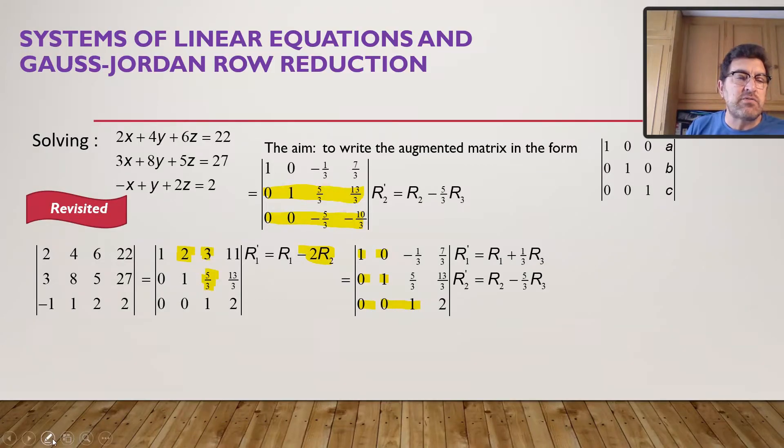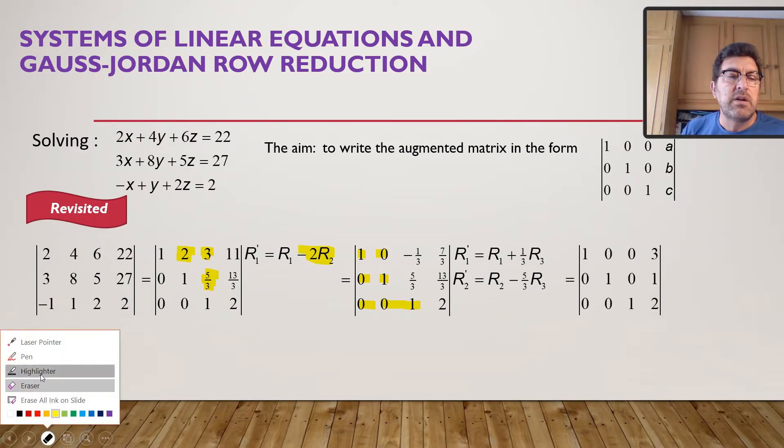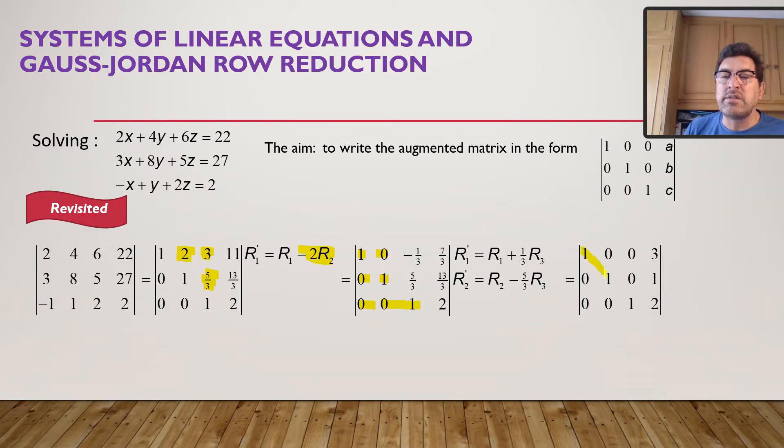Let me just get rid of those marks, and then we can see how that worked. There we go. So, we have a beautiful 1 diagonal. We have 0 entries at the top, 0 entries at the bottom. So, we have the identity matrix multiplied by that. So, what does that mean? It means X is 3, Y is 1, and Z is 2.